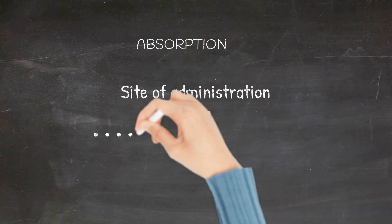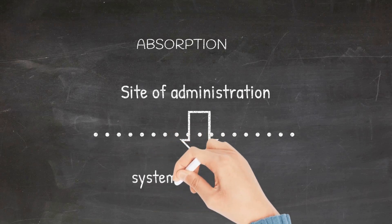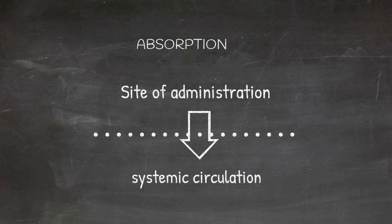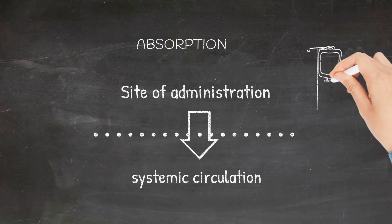From the site of administration, the drug crosses the biological membrane to reach the systemic circulation. This process is called absorption. Unless you give the drug intravenously, in every other route, the drug has to cross the biological membranes.